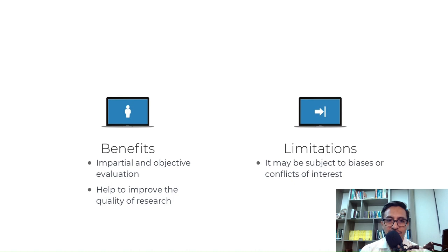Benefits of traditional peer review include that it provides an impartial and objective evaluation of research, it helps to identify potential flaws in the research, and it can help to improve the quality of research over time.